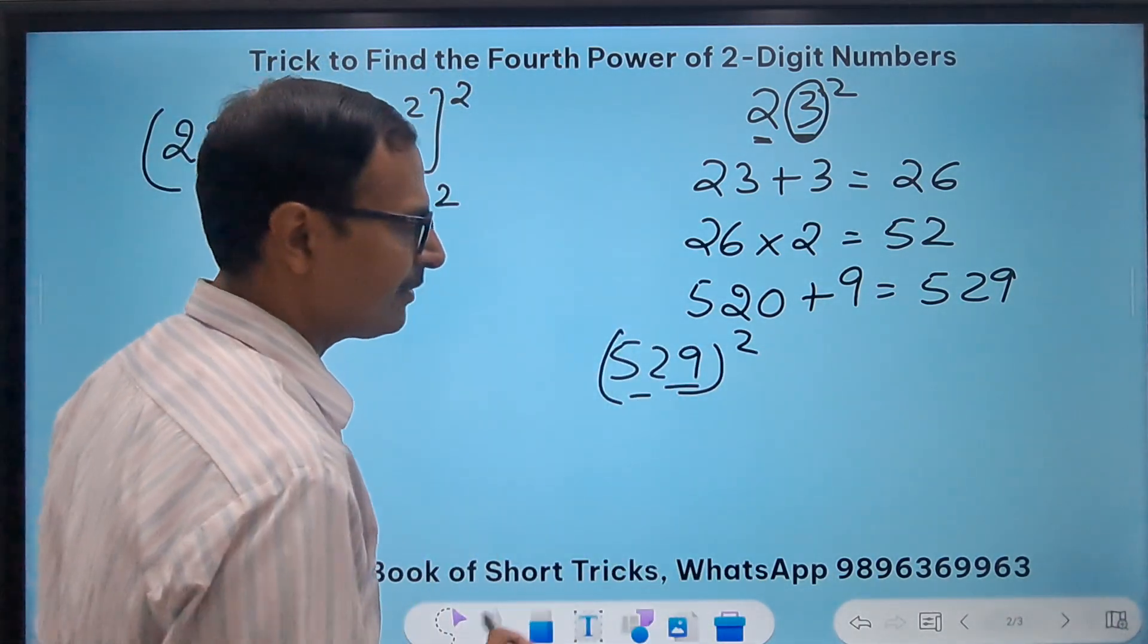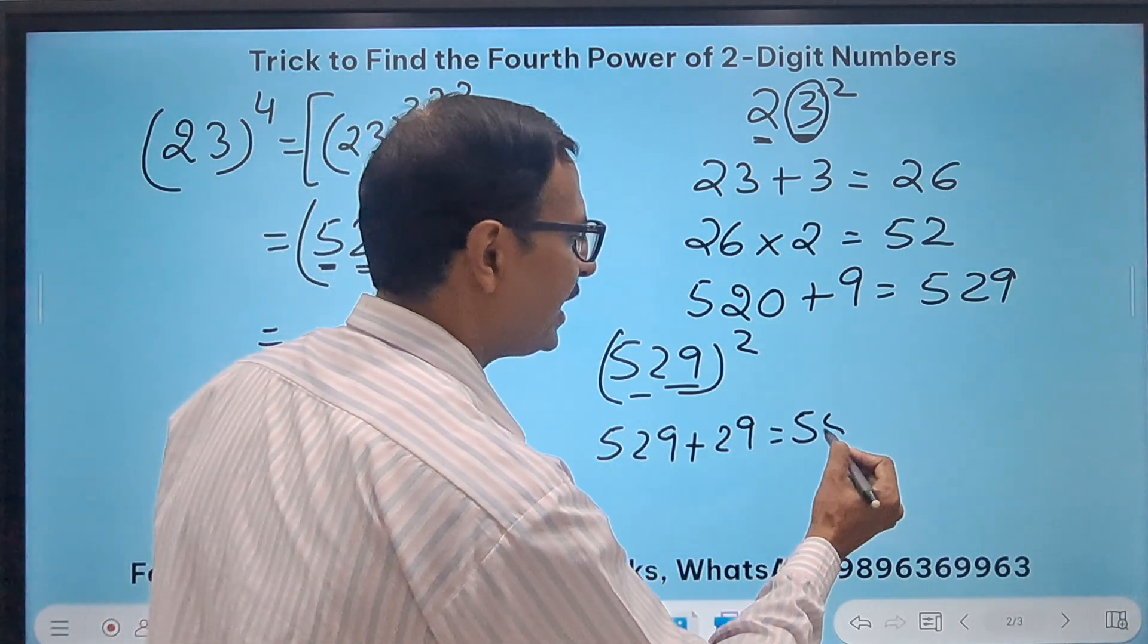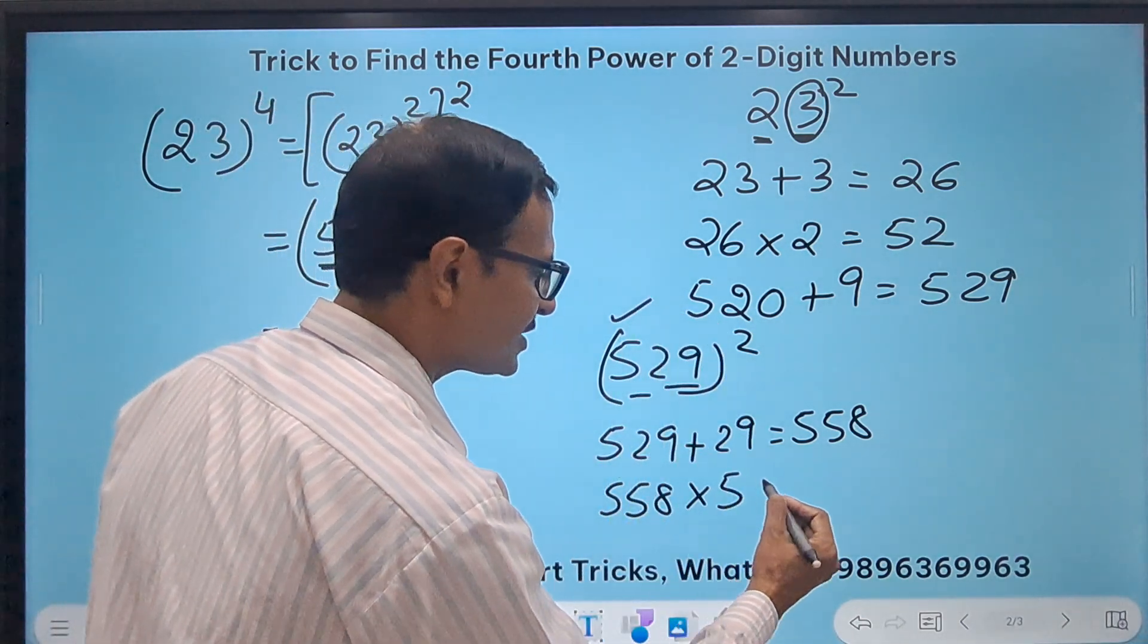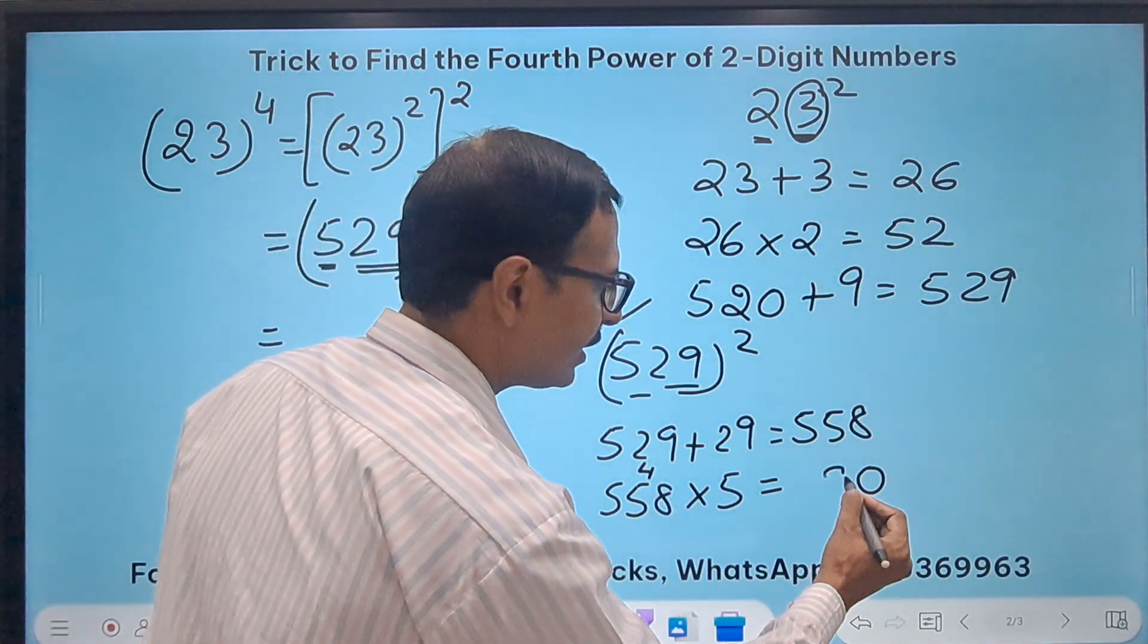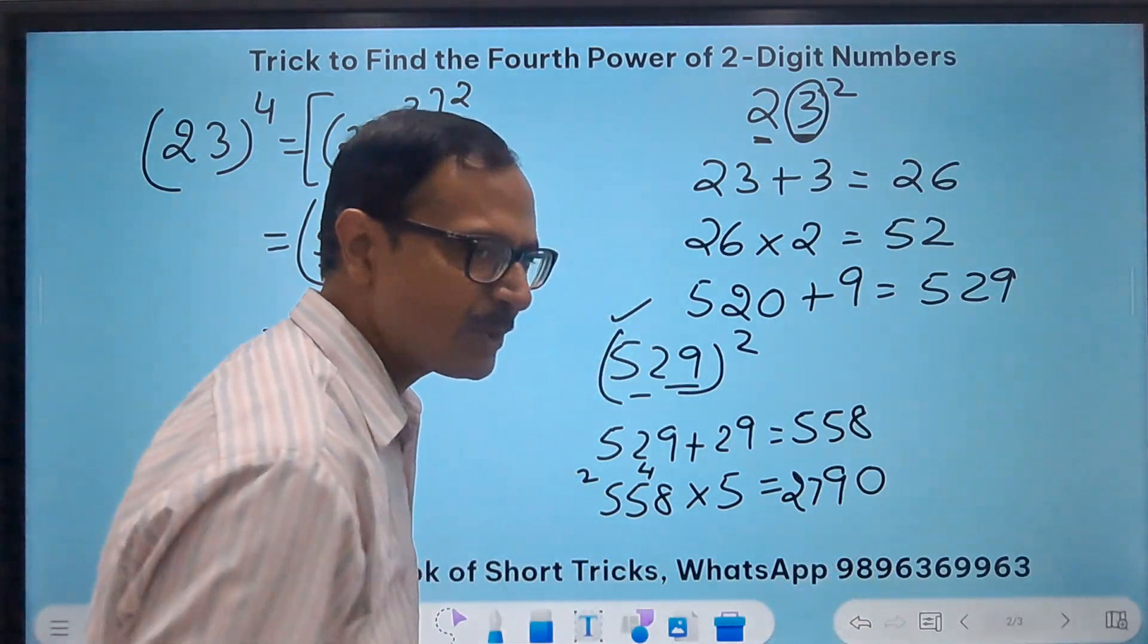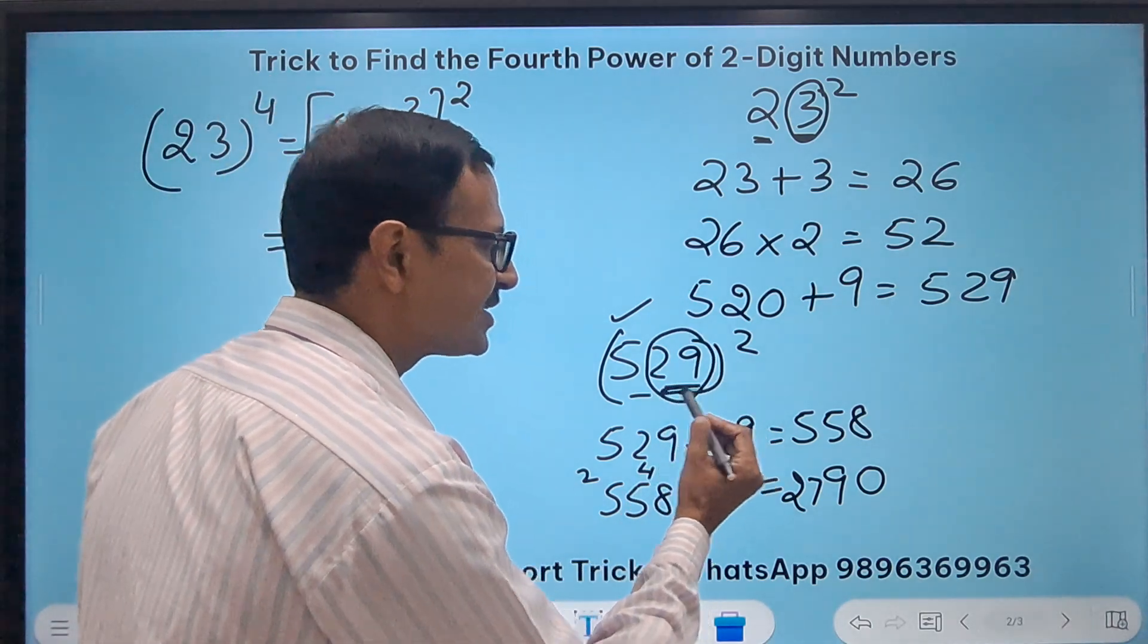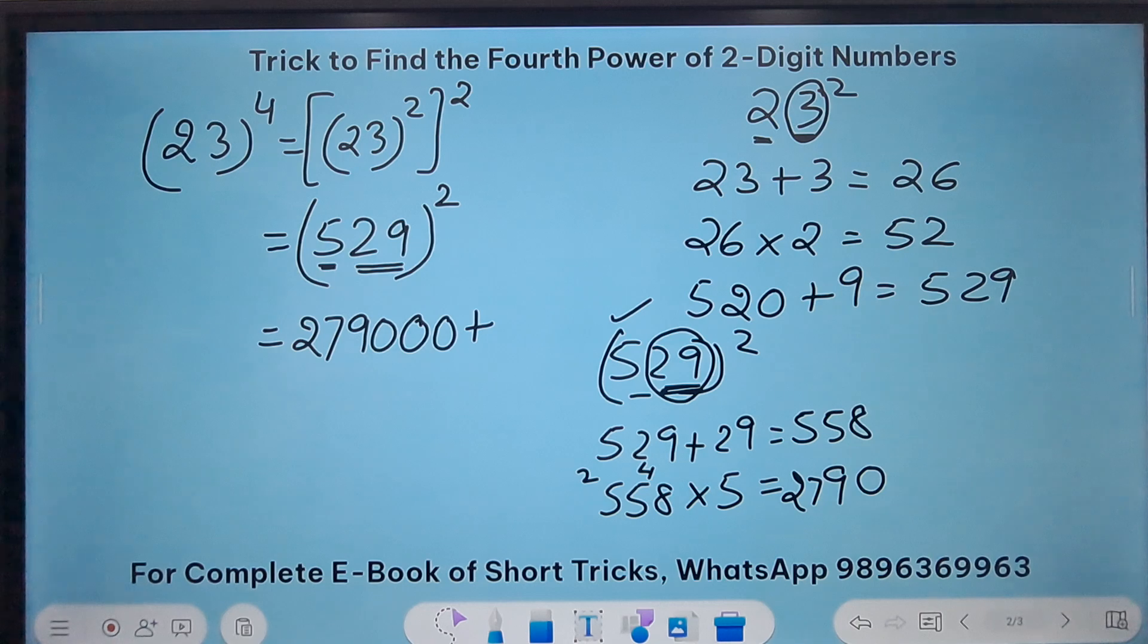I'll take 29 and 5. If I have to do 529 square, I will do 29 and 5. So 529 plus 29 gets me 558, and then 558 times the first digit 5. This is pretty easy: 8 times 5 is 40, 5 times 5 is 25, so 2,790.